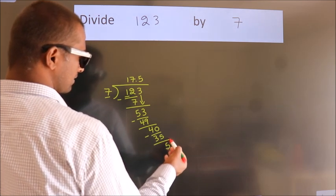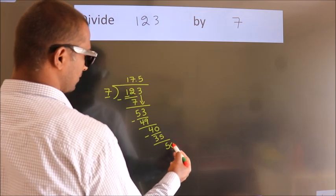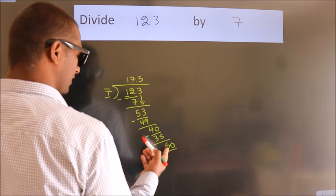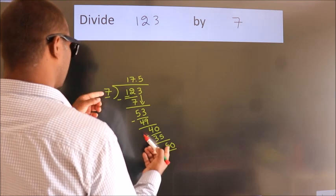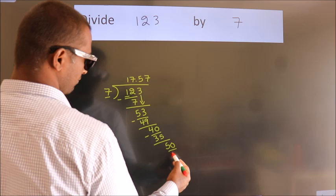After this, we already have the decimal, so directly take 0. So 50. A number close to 50 in 7 table is 7 sevens 49.